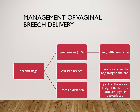There are three methods applied in the second stage of labor. Spontaneous breech delivery — with very little assistance — occurs in around 10 percent of cases. The preferred method is assisted breech delivery, where the assistance of the obstetrician is required from beginning to end. The third option is breech extraction, where part or the entire body of the fetus is extracted — almost pulled out — by the obstetrician.